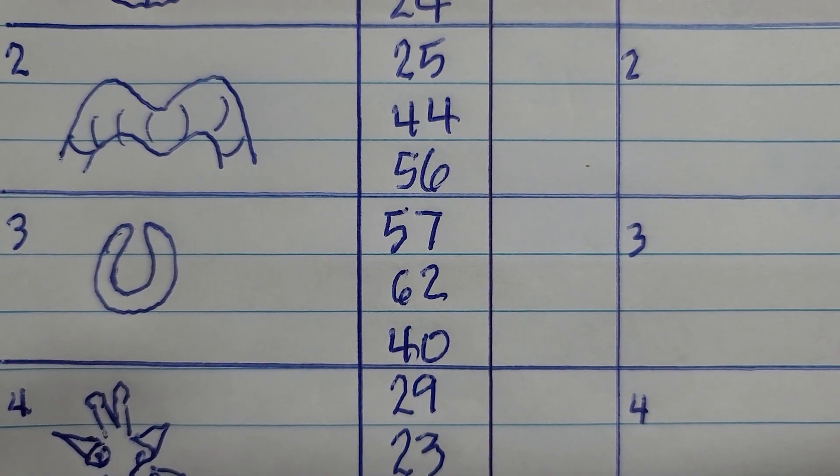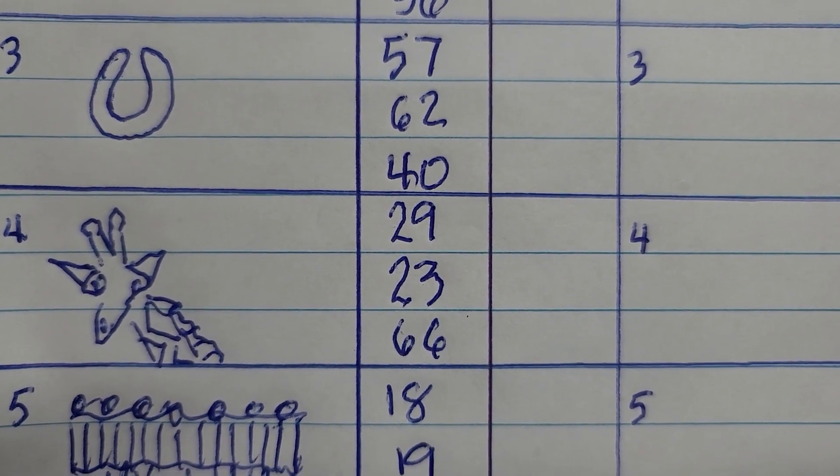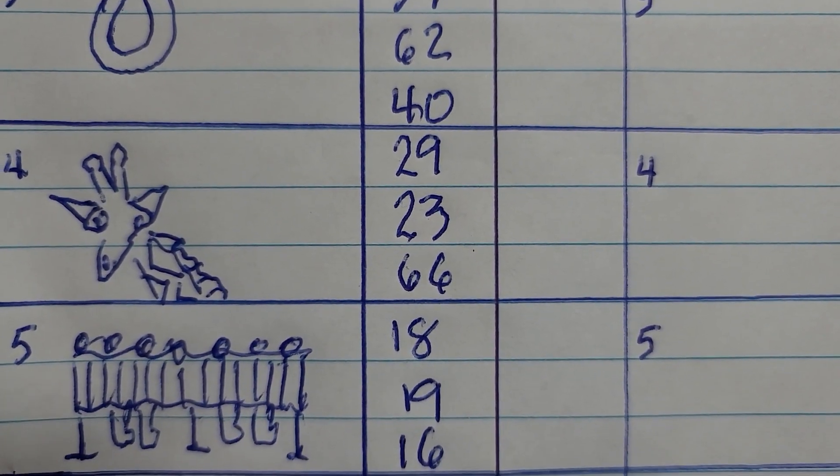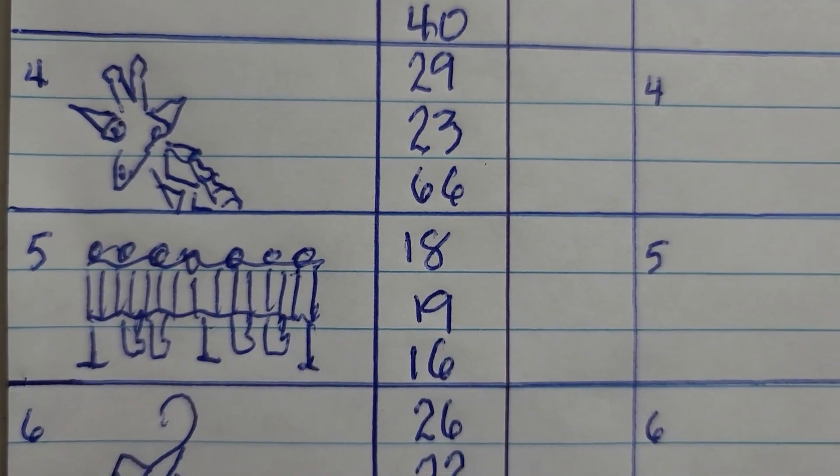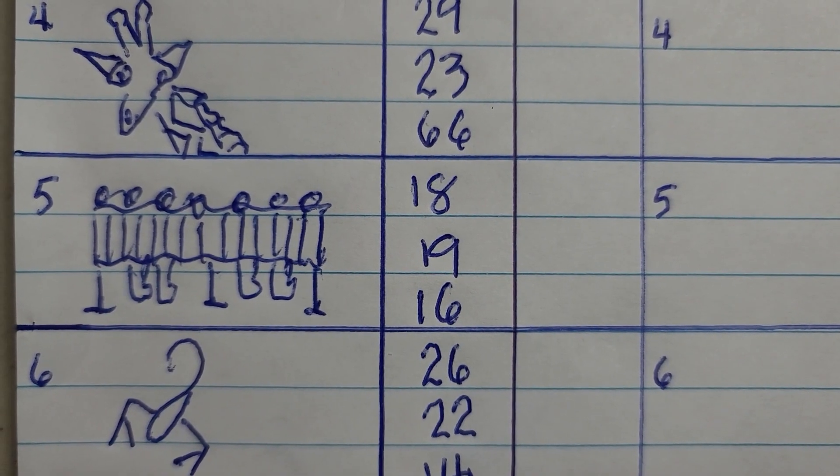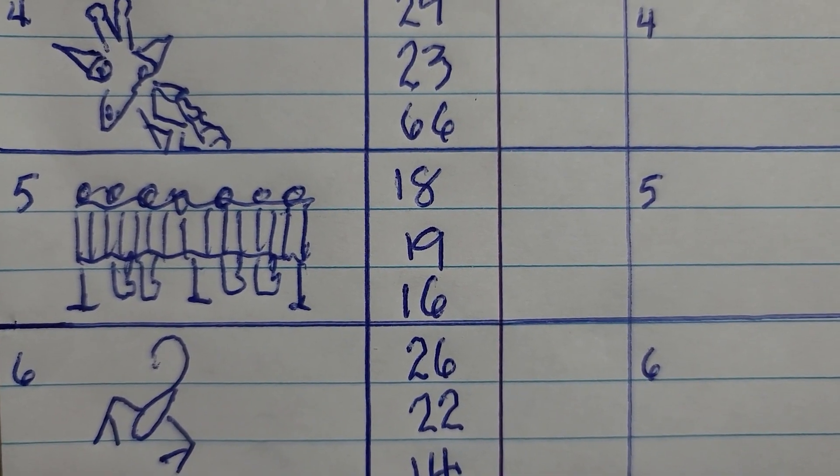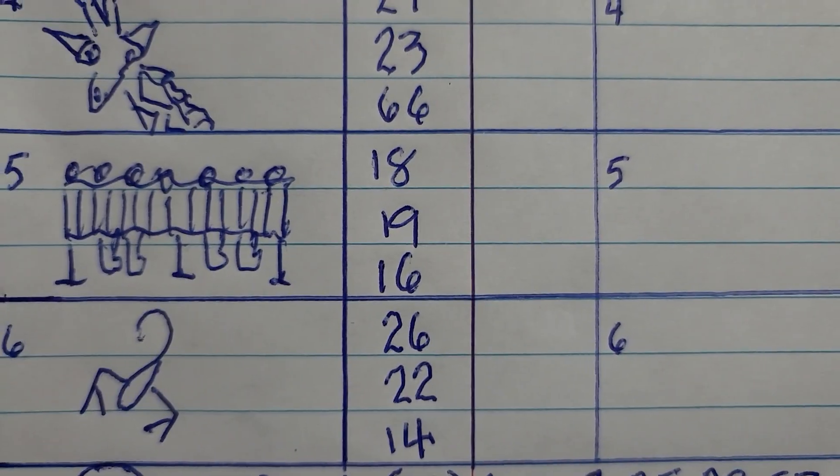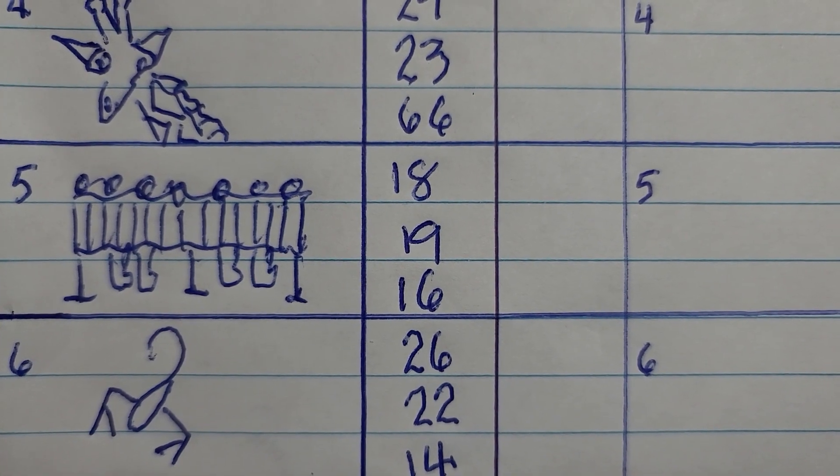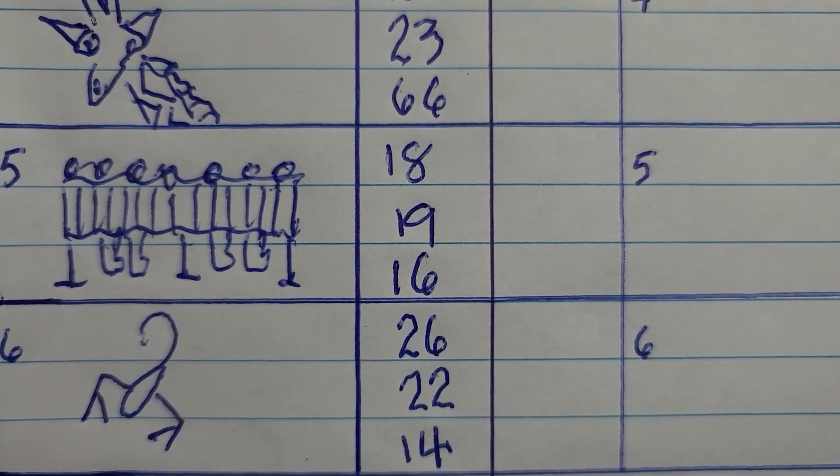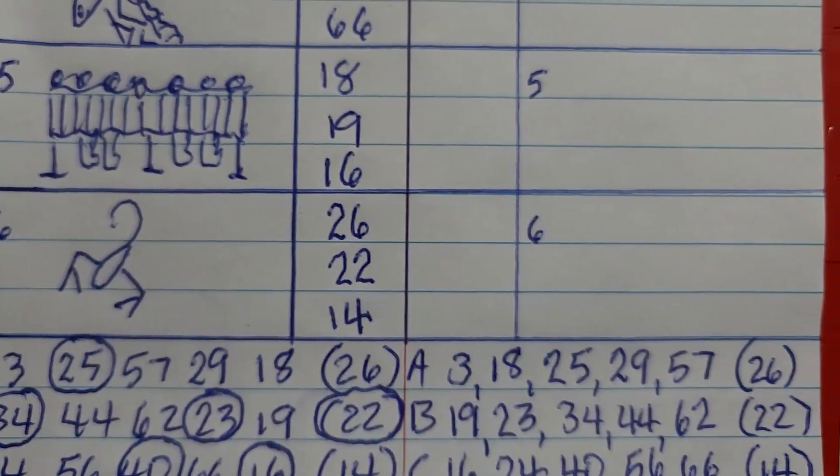The fourth sketch is a giraffe, and the numbers associated with that are 29, 23, and 66. The fifth sketch is a voting booth, and the numbers associated with that are 18, 19, and 16. For the Powerball, I have a scorpion, which is 26, 22, and 14.